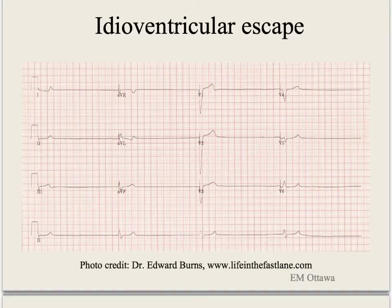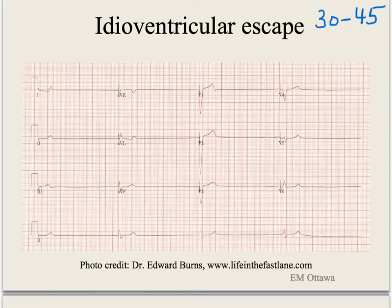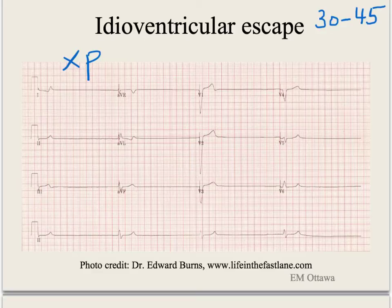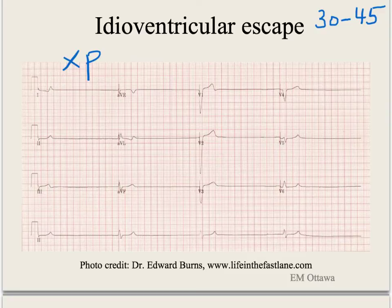This next rhythm is an idioventricular escape rhythm. The rate is about 30 to 45 and it is generated in the His bundle. Since it is not generated from the SA node, nor are there any contractions of the atrium, there will be no P waves and no way to measure the PR interval, nor can we draw any conclusion between P and QRS complexes. The RR interval is regular and the QRS complexes are narrow.